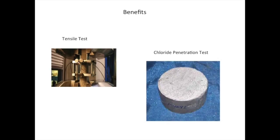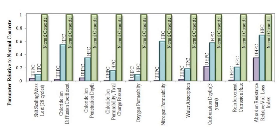The benefits of UHPC include, but are not limited to: high frost, salt, and chloride resistance; high compressive strength; higher tensile strength; increased durability; and low repair and maintenance cost. Overall, these attributes allow UHPC to outlast many other types of normal concrete, especially in outdoor environments. The following graph compares several characteristics of UHPC to those of normal concrete, and in each case UHPC significantly outperforms normal concrete.